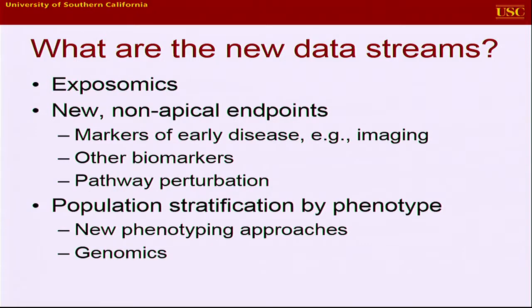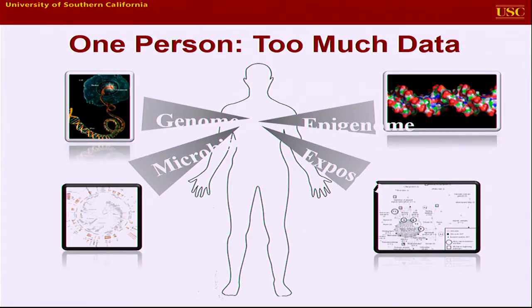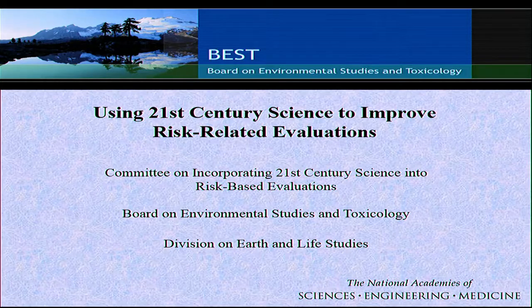I want to go on to our current problem and why we're here today — this problem of new data. Things we'll be talking about over the day: exposomics, new non-apical endpoints, markers of early disease, pathway perturbation, and the ability to stratify populations by phenotype and genomics to understand within groups that may have varying susceptibility and perhaps varying underlying mechanisms what role a factor may have in disease production. Simple summary: one person, too much data.